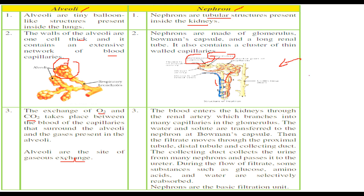For nephrons, blood enters the kidney through the renal artery and branches into many capillaries in the glomerulus. Water and solutes are transferred to the nephron at the Bowman's capsule. The filtrate then moves through the proximal tubule, distal tubule, and collecting duct. The collecting duct collects urine from many nephrons and passes it to the ureter. During the flow of the filtrate, substances like glucose, amino acids, and water are selectively reabsorbed because they are important. Nephrons are the basic filtration unit.